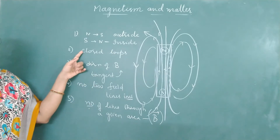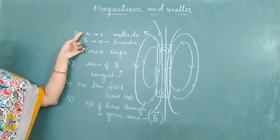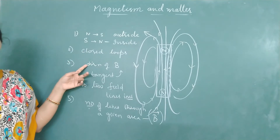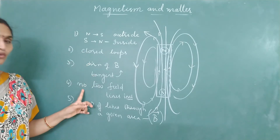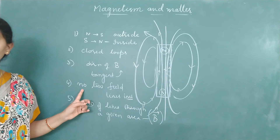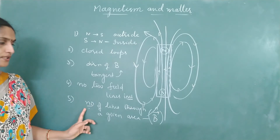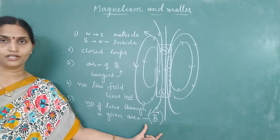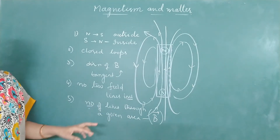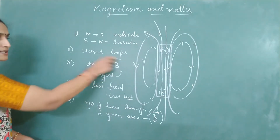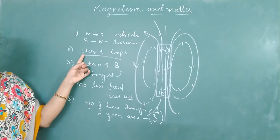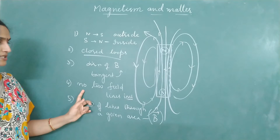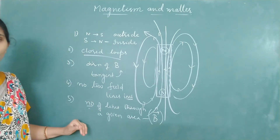To recap: magnetic field lines always form closed loops, directed from north to south outside and south to north inside. The direction of magnetic field is given by the tangent. No two field lines intersect each other. The number of field lines through a given area is a measure of the strength of the magnetic field. The key difference from electric field lines is that electrostatic field lines never form a closed loop, whereas magnetic field lines always do.